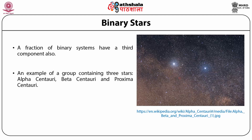A fraction of binary systems also have a third component — an example is the system containing alpha Centauri, beta Centauri, and Proxima Centauri. Depending on the way a binary group reveals itself, it may be a visual binary, a spectroscopic binary, or an eclipsing binary group. In a few cases, a binary group may be visual as well as eclipsing, or spectroscopic as well as eclipsing. Such groups are more useful as they give information not only about the masses of their members but also about their sizes.